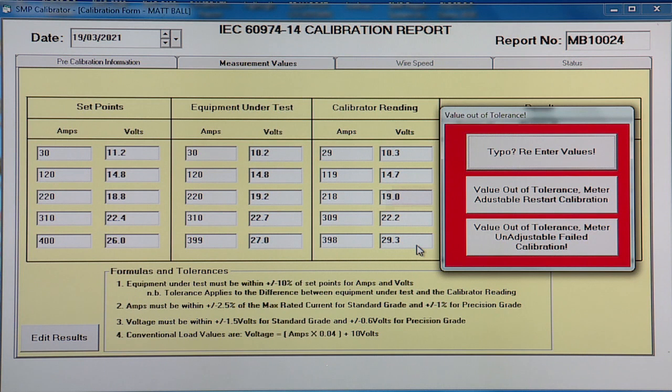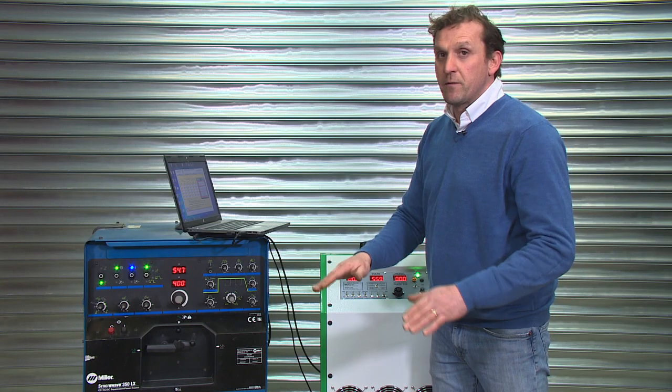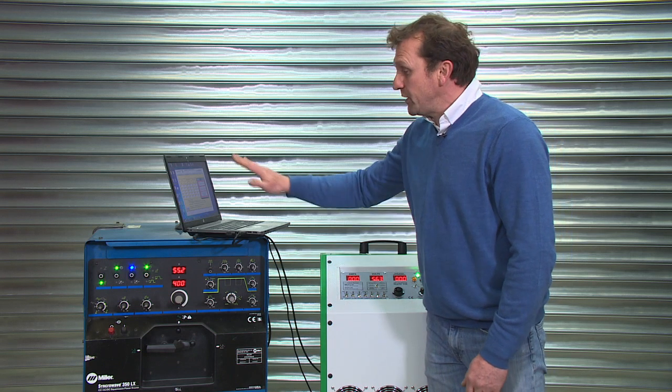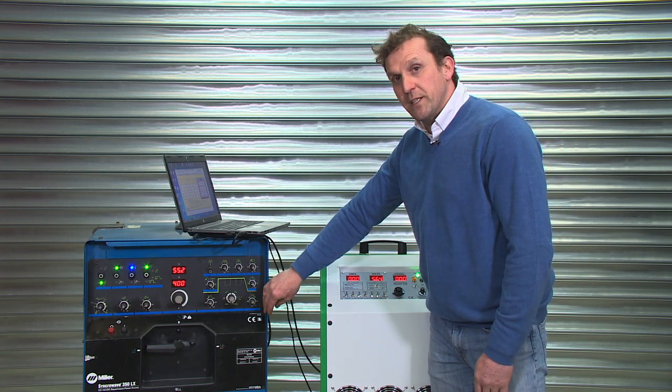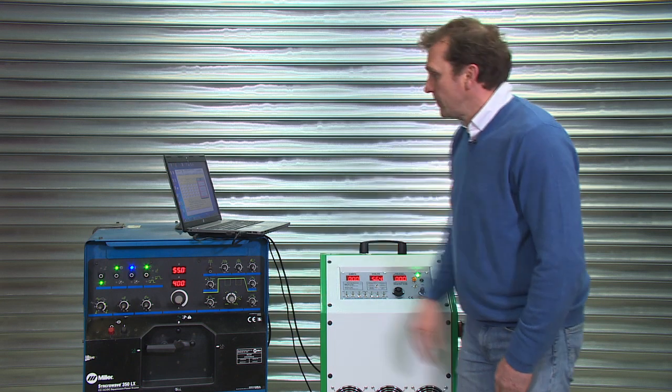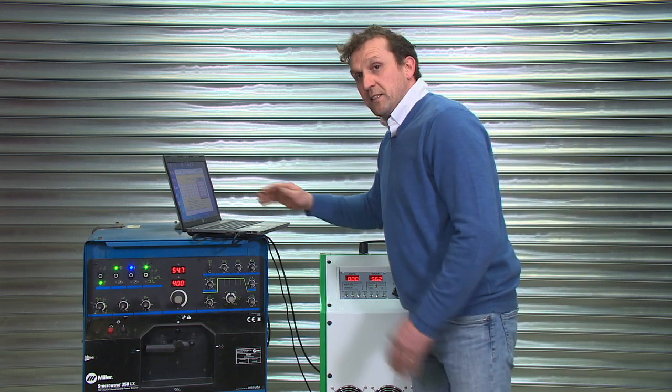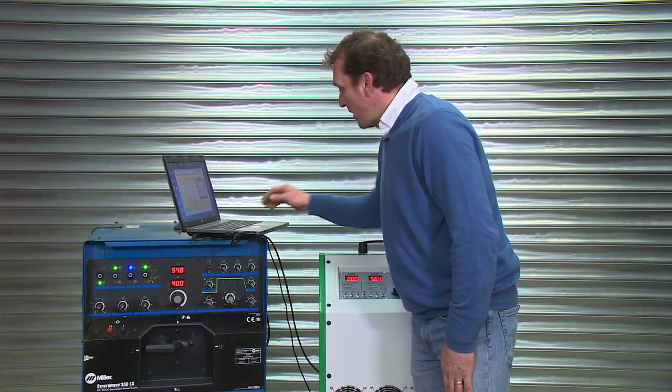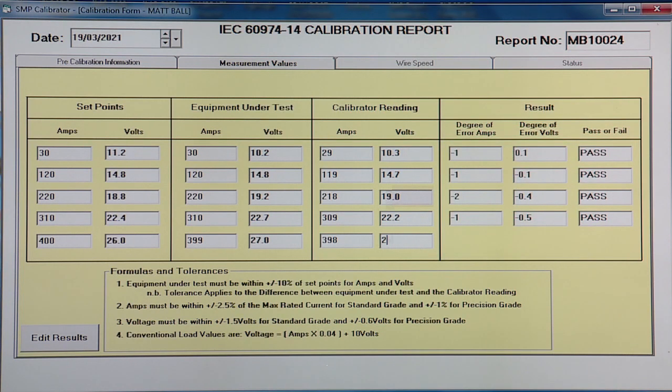If the value is out of tolerance, but the meter's not adjustable, it'd be a straight fail. There's no grey area. It's straight fail. Issue a fail certificate and mark the machine as failed calibration. In this instance, I'm going to put it down as a typo, my error. And it's 26.3.